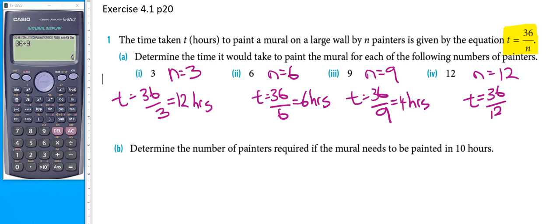In our fourth case, 36 divided by 12 equals 3 hours.